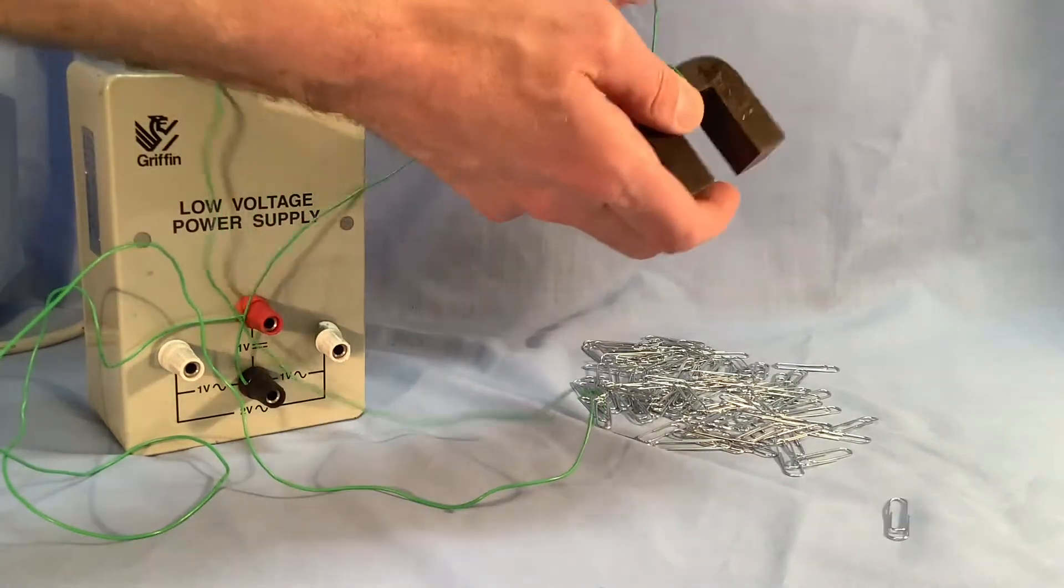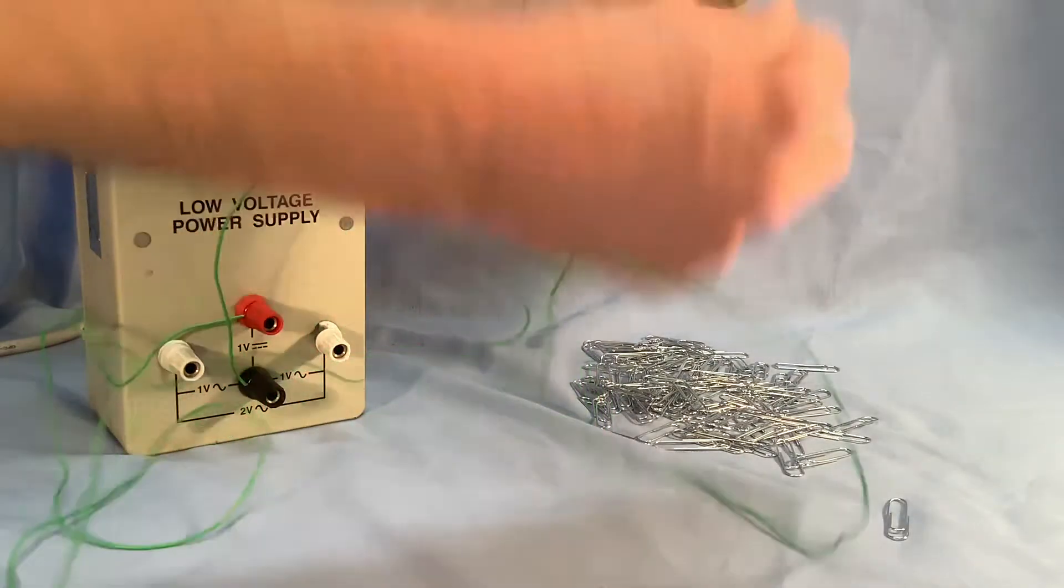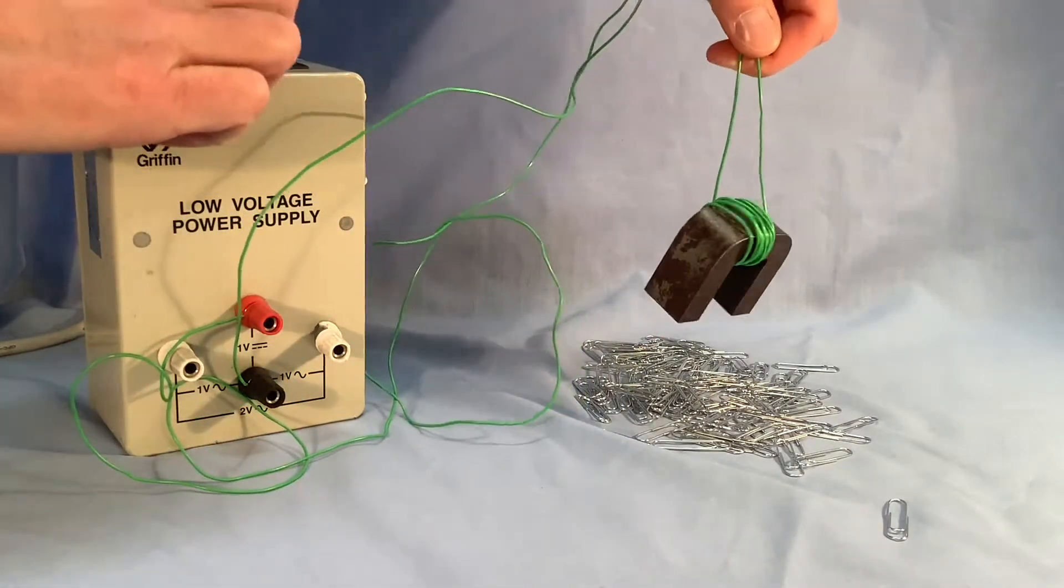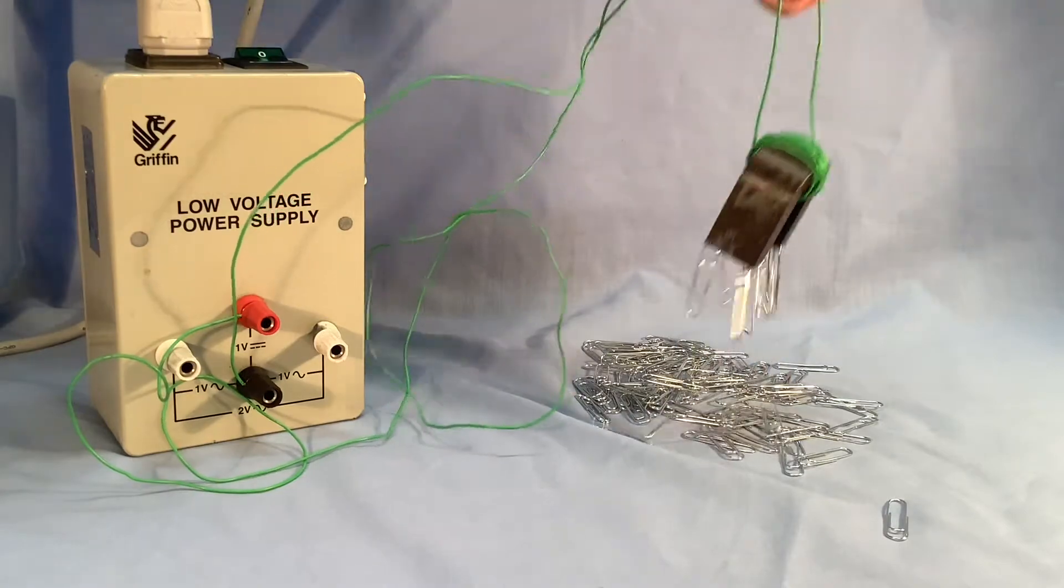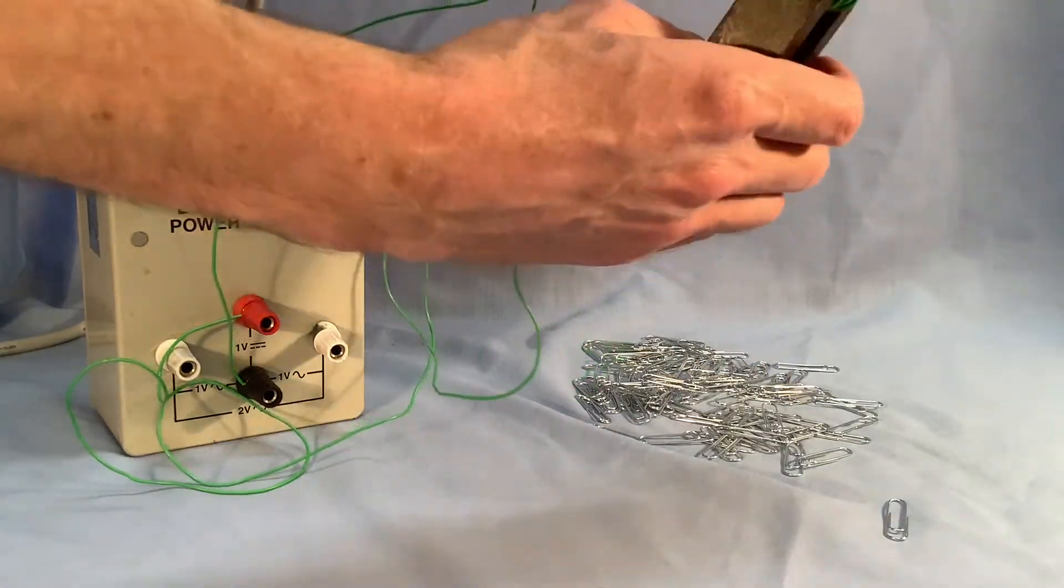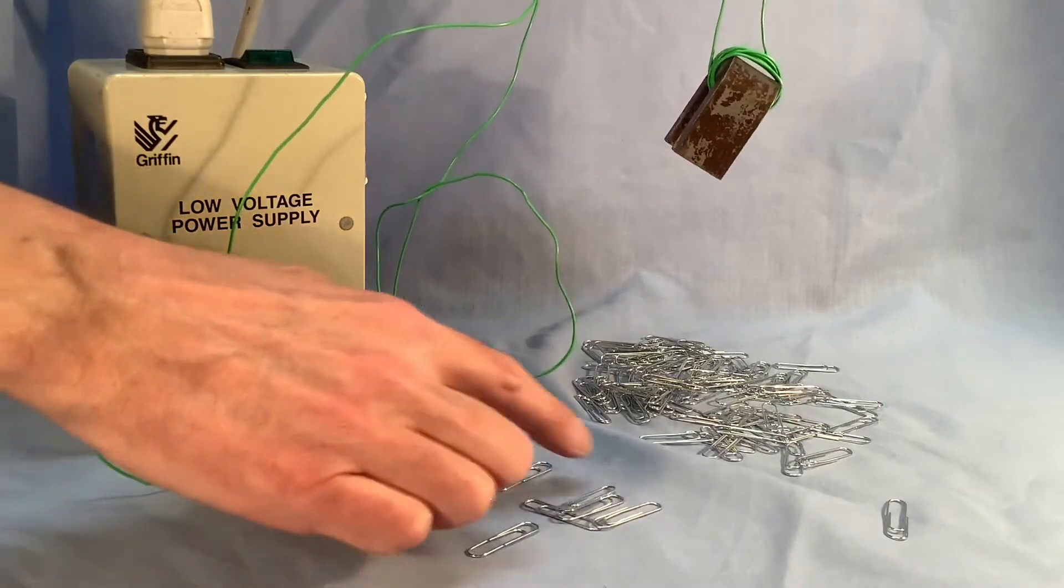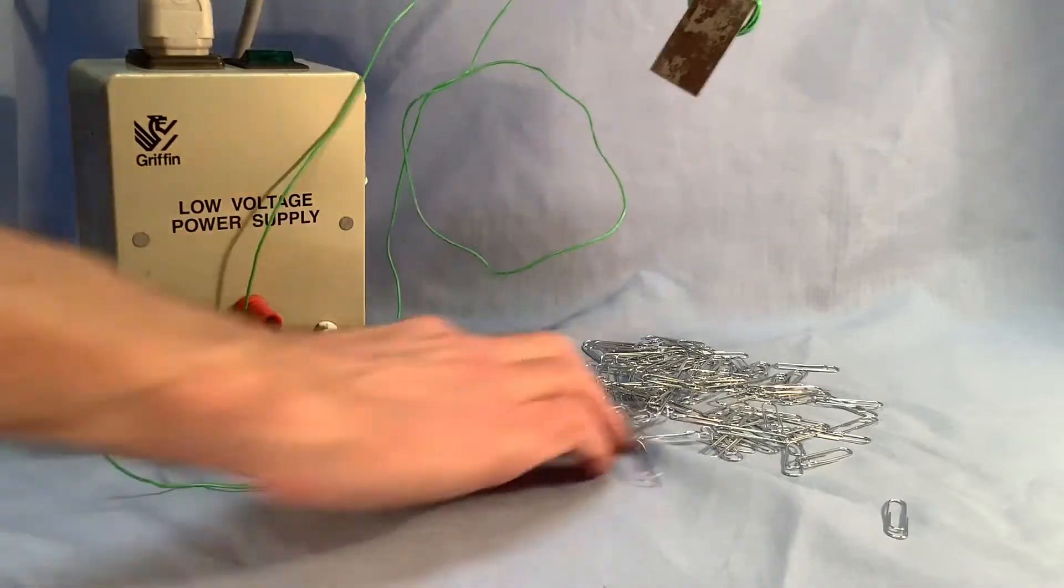So now let's add to ten turns and try again. With ten turns, I'm getting more like one, two, three, four, five, six, seven paperclips.